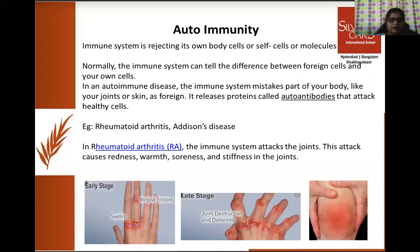Normally our immune system can tell the difference between foreign cells and your own cells. But if it loses that property, it starts rejecting its own body cells or molecules — due to some unknown reasons or genetic modifications — resulting in a disease called autoimmune disease. This is called autoimmunity. That means your body produces antibodies against your own cells, mistaking parts of your body like joints or skin as foreign particles, and releases proteins called autoantibodies which attack healthy cells.